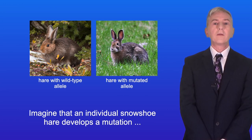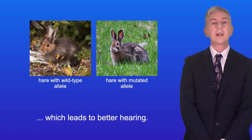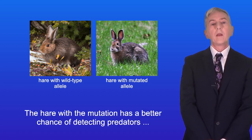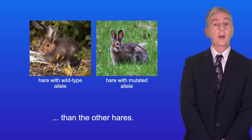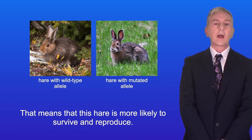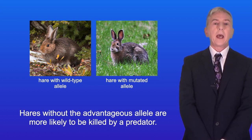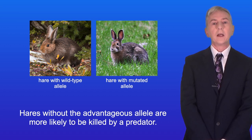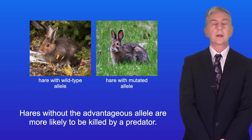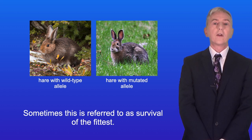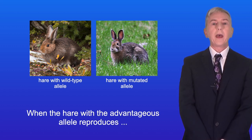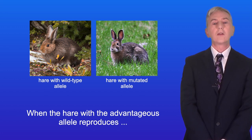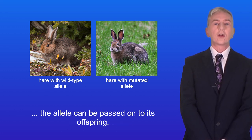Imagine that an individual snowshoe hare develops a mutation which leads to better hearing. The hare with the mutation has a better chance of detecting predators than the other hares. That means that this hare is more likely to survive and reproduce. Hares without the advantageous allele are more likely to be killed by a predator. Sometimes this is referred to as survival of the fittest. When the hare with the advantageous allele reproduces, the allele can be passed on to its offspring.